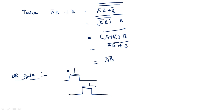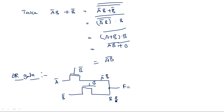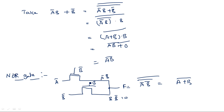For the NOR operation, we have transistors with inputs A-bar and B-bar. The function at the output is A-bar B-bar. The other branch gives B times B-bar which equals 0. So the function is A-bar B-bar, and taking its complement gives A-bar B-bar whole bar, which equals A plus B whole bar — this is the NOR operation.